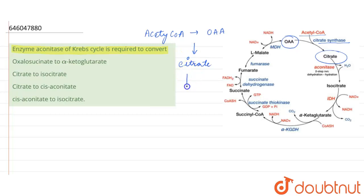Now, this citrate is isomerized by dehydration and rehydration and forms isocitrate. This is a two-step process.